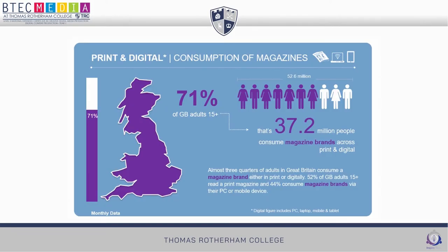As of around 2020, the number of people consuming digital magazines compared to print is going up. A 2017 statistic claimed that 44% of people who read magazines consume them via PC or mobile phone. It's logical to think that has probably risen since, possibly pushing close to 50% of magazine readers choosing digital over a paper copy.